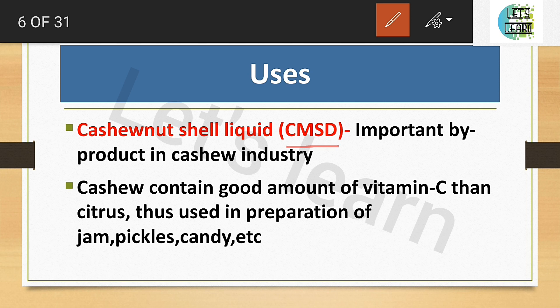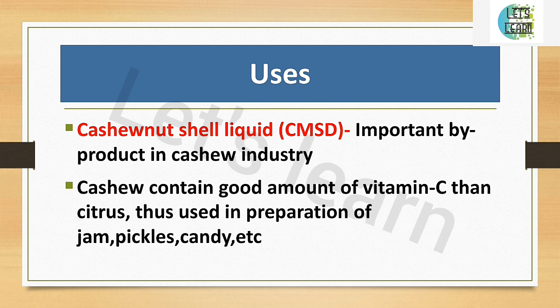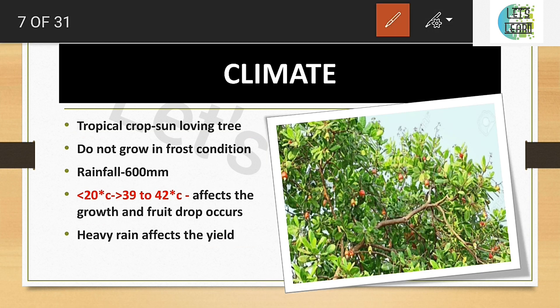Regarding the uses of cashew, the cashew nut shell liquid (CNSL) is a very important byproduct of the cashew industry. Cashew also contains a good amount of Vitamin C, more than citrus. Cashew can be used in preparation of jam, pickle, and candy.